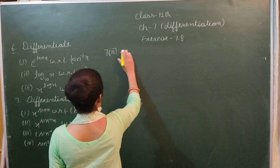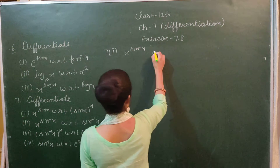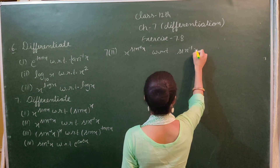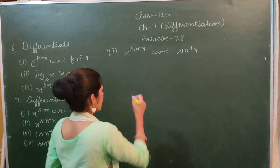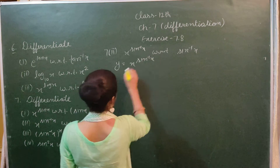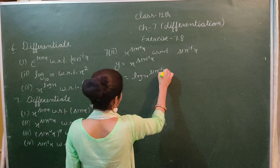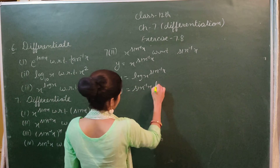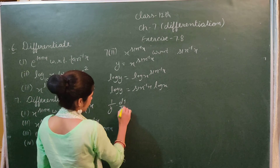In the second part of the seventh sum, we have to differentiate x^(sin⁻¹x) with respect to sin⁻¹x. We let y = x^(sin⁻¹x). Since it is function to the power of function, we take log: log y = sin⁻¹x times log x.